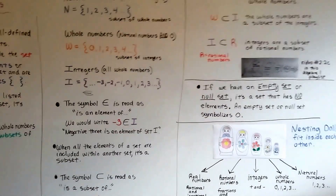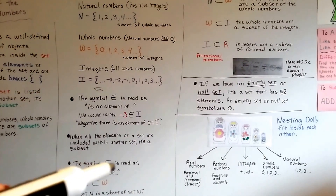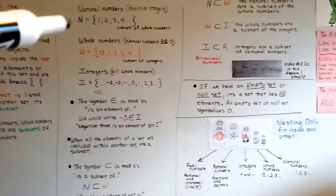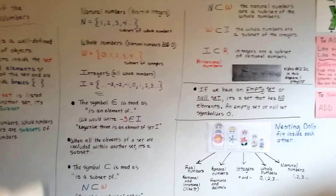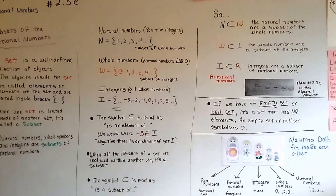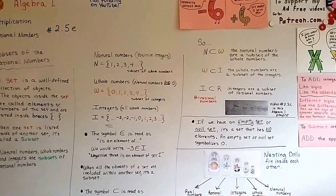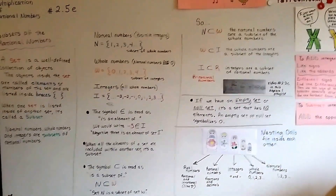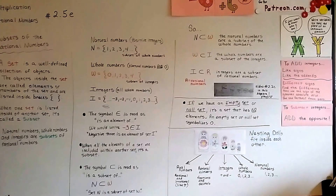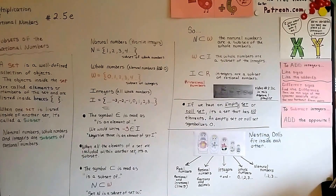Now you understand the symbols. Remember, this long E stands for element, and this long C stands for subset. When you see these symbols with a capital letter and braces, you know that means it's a set. That is the end of our unit on multiplication of rational numbers. We're going to move on to 2.6a and talk about division of rational numbers. I hope everyone's doing all right — keep your chin up, let me know if this video helped you, and I'll see you on the next video: dividing rational numbers. Bye.